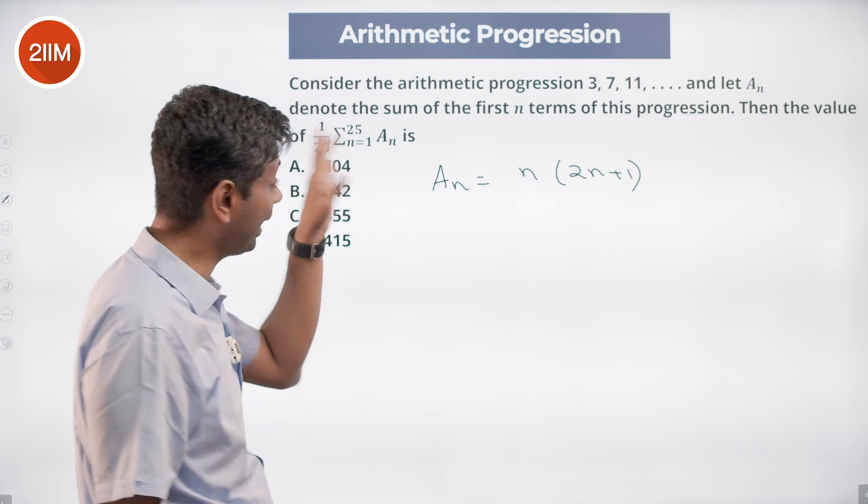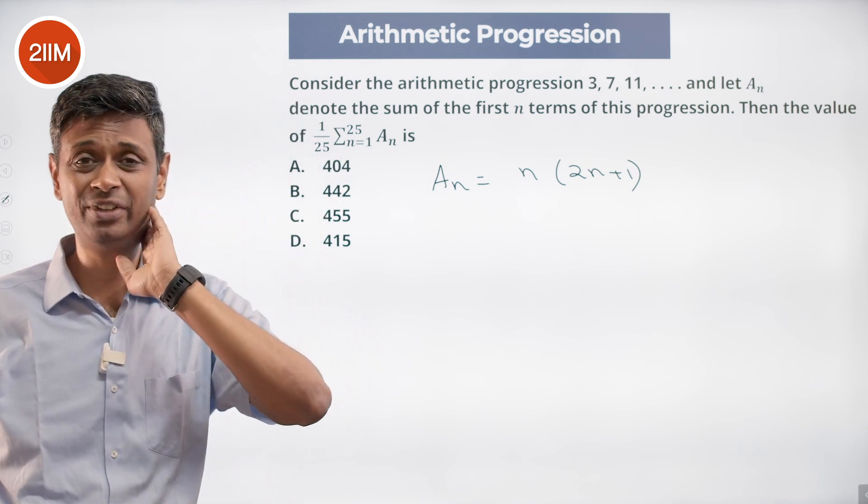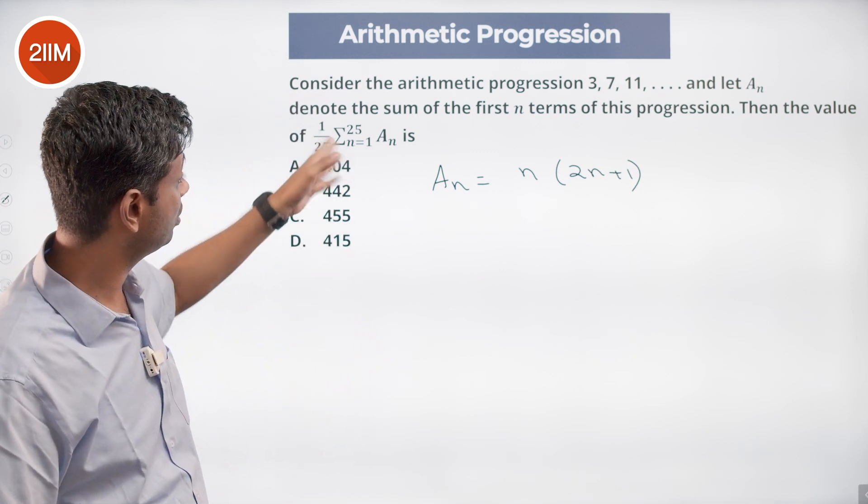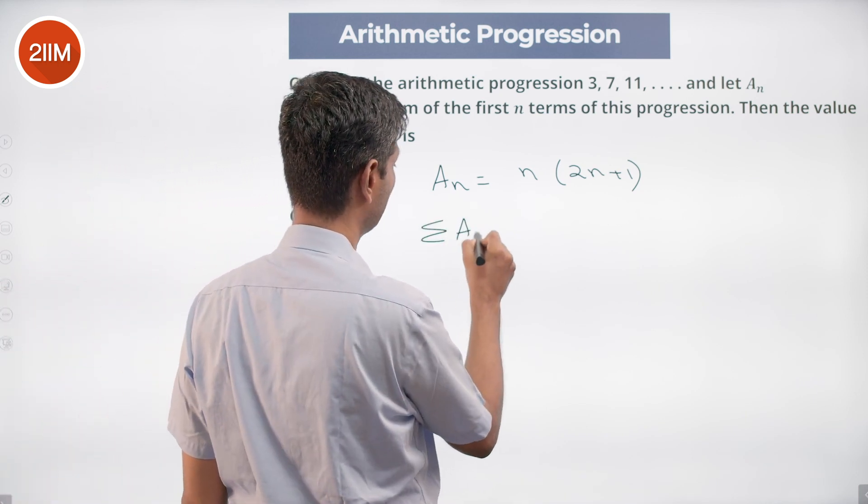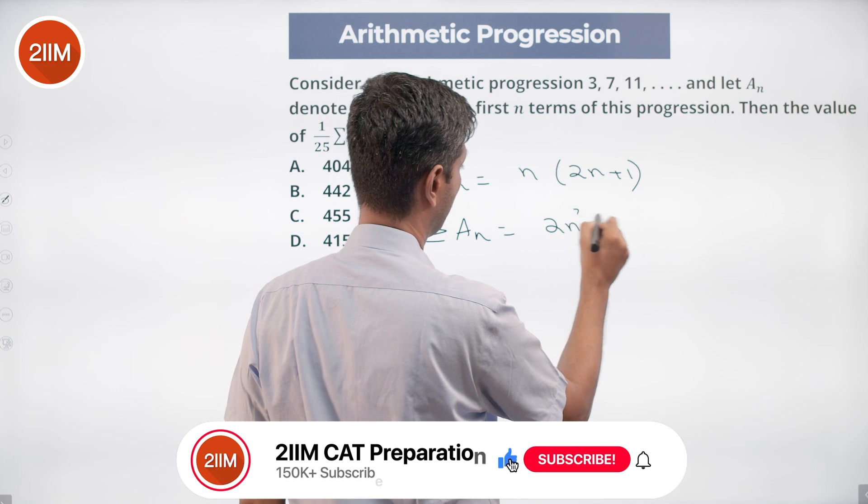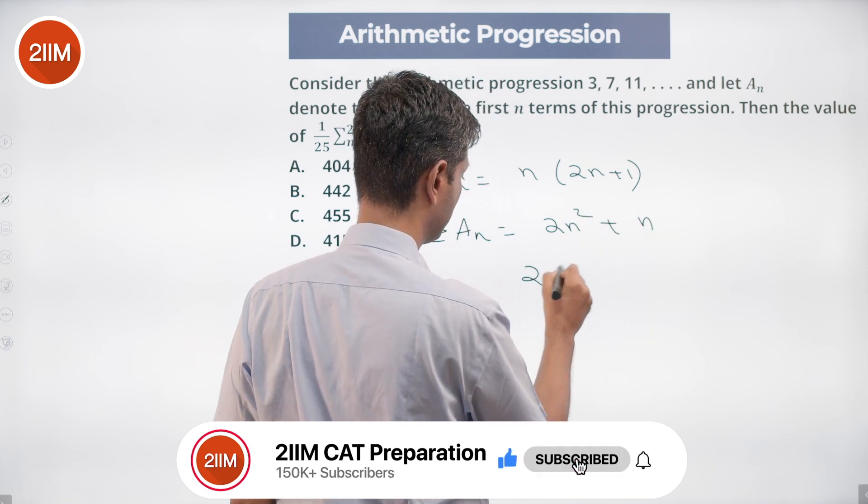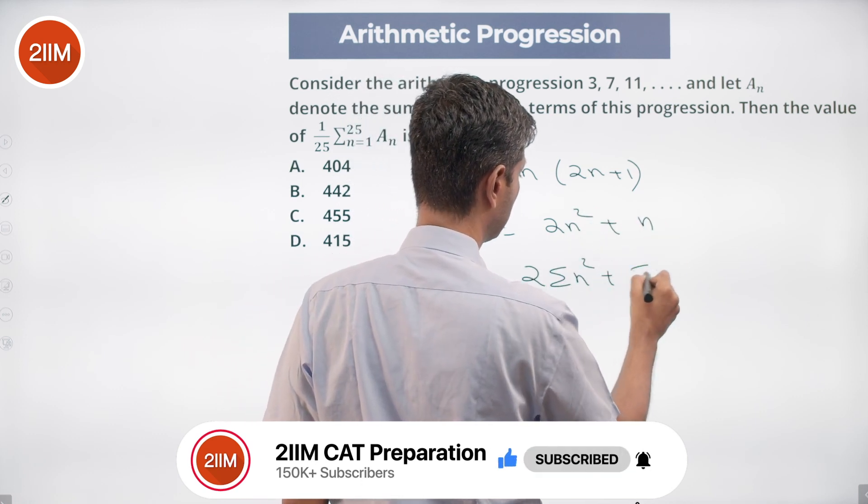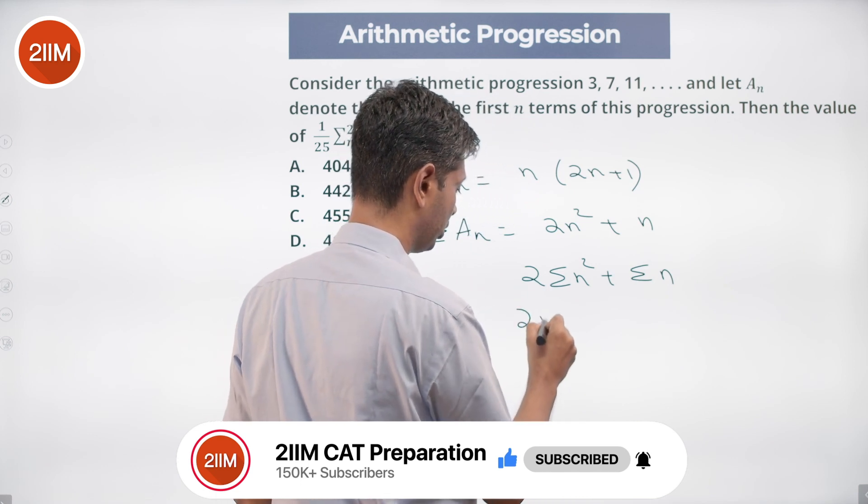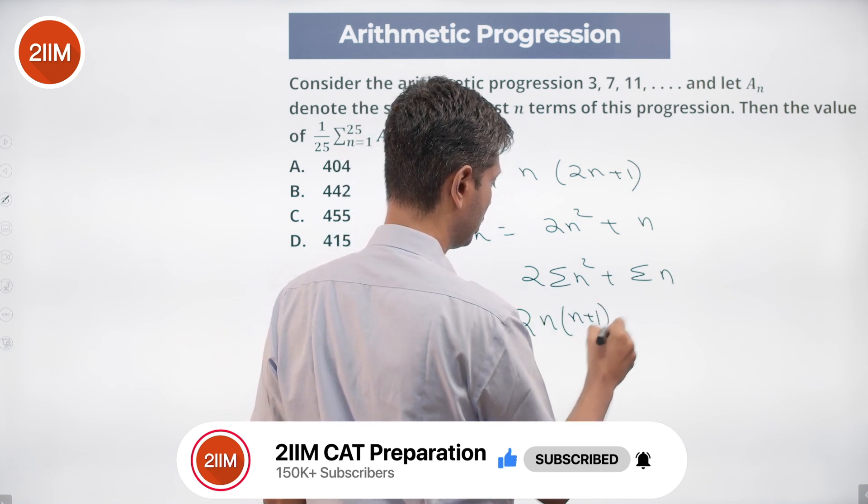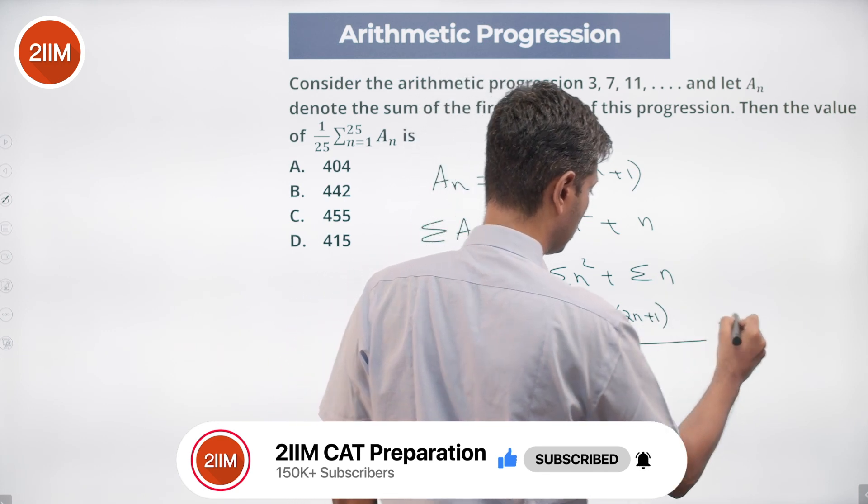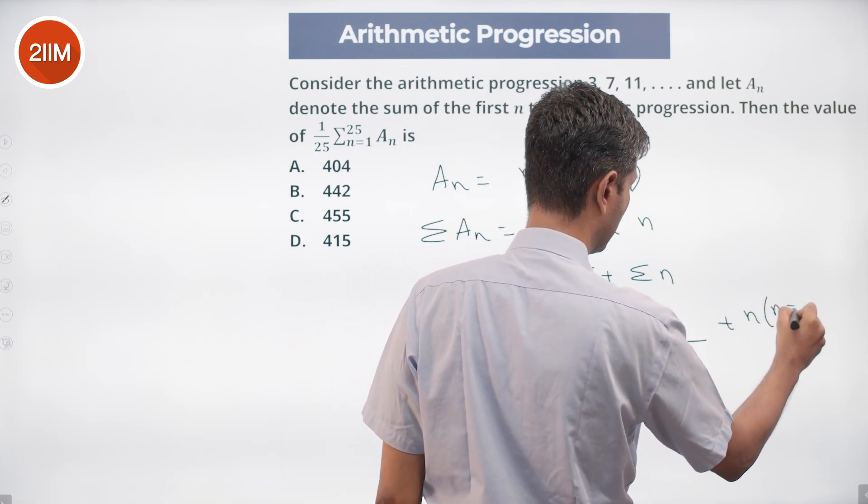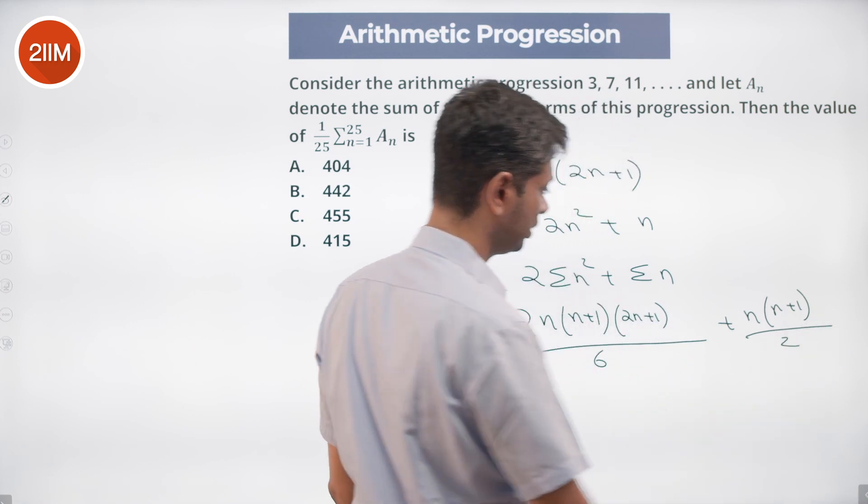We want to do sigma a_n and then do 1/25 of it. We want to do 25 times then divide by 25. So I do summation a_n of 2n square plus n. 2 times sigma n square plus sigma n. 2 times n into (n+1) into (2n+1) by 6 plus n into (n+1) by 2.